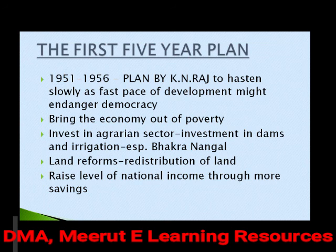The First Five-Year Plan ran from 1951 to 1956 and was laid down by K.N. Raj, who advised to 'hasten slowly' — meaning quick but at a measured pace. Too fast a pace would endanger democracy and neglect the poorer sections of society; too slow and industrial development would also lag behind. So we needed to be quick enough without leaving any section of society behind.